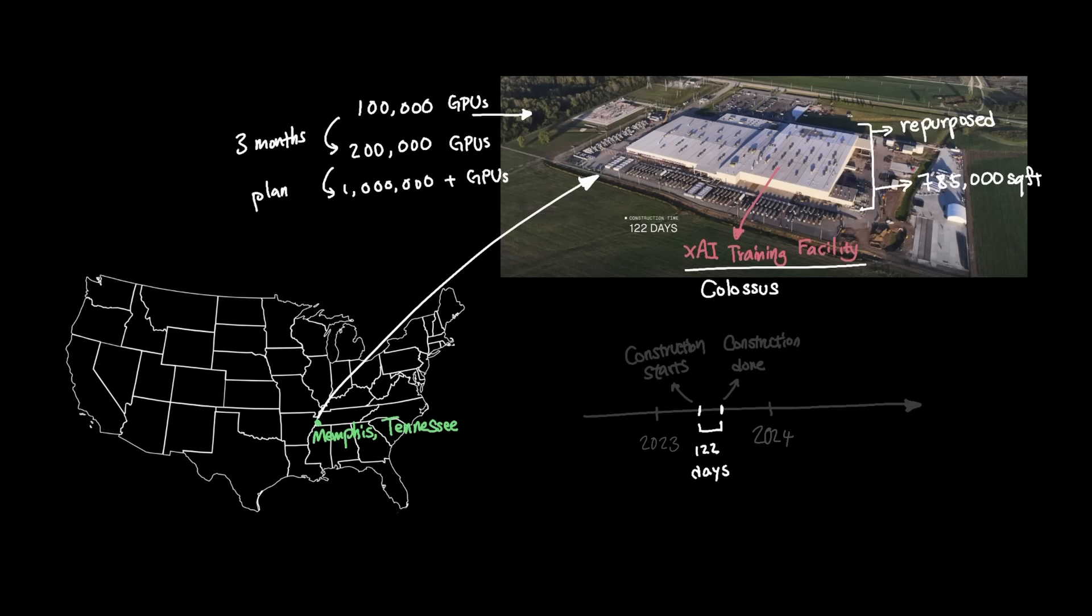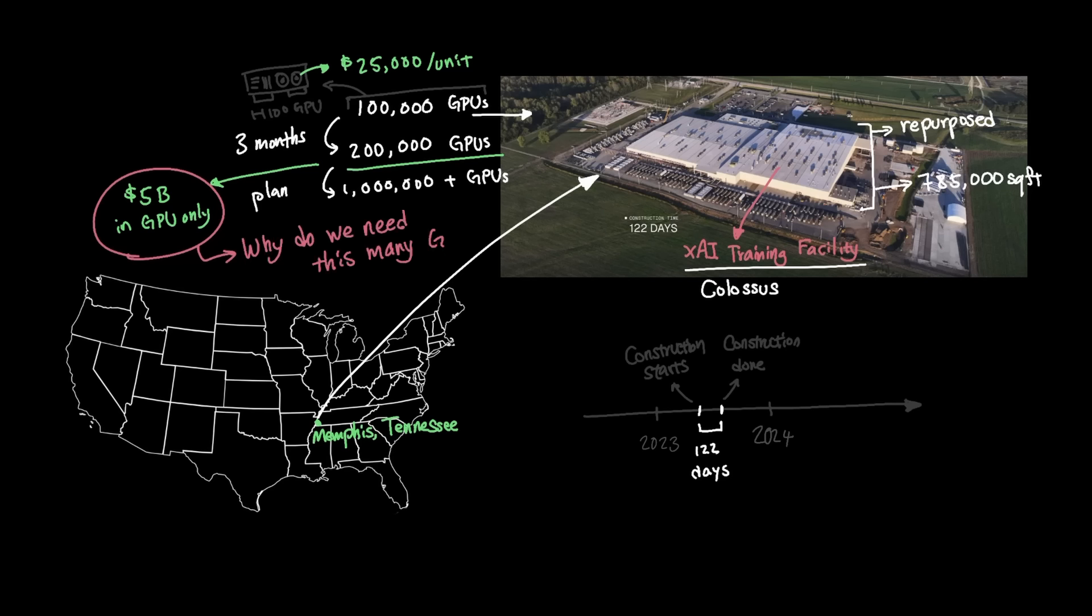Now you might be looking at this and wondering, is this all that necessary? This just seems like an overkill to be using so many GPUs for a simple chatbot. Here's where it gets crazy: each H100 GPU markets for about $25,000 per unit. So xAI's current capacity in Colossus of 200,000 GPUs requires an investment of $5 billion in GPU equipment alone.